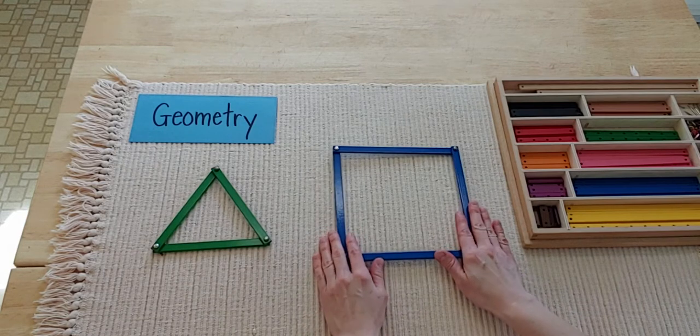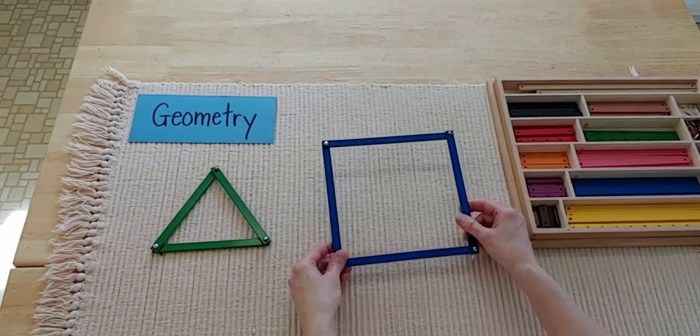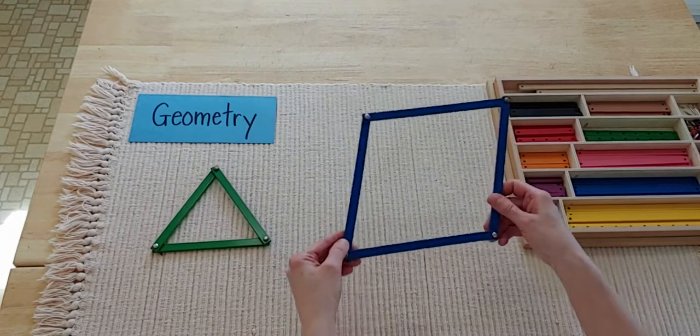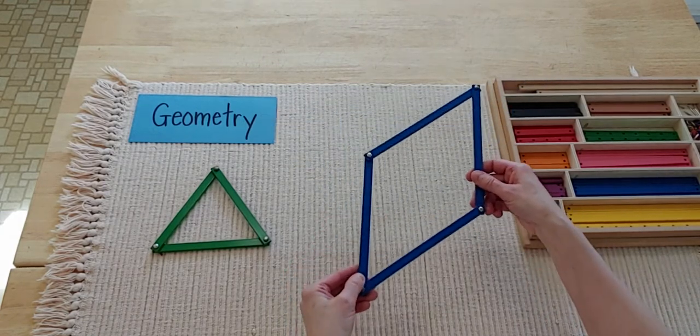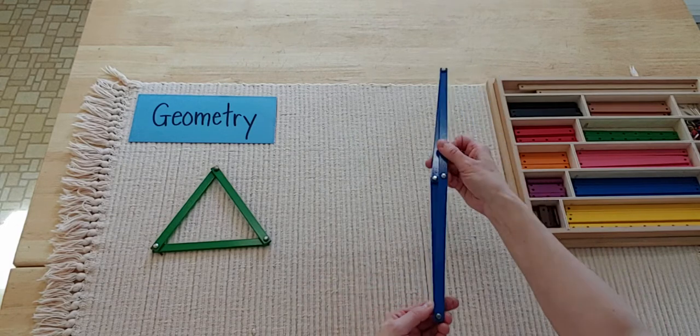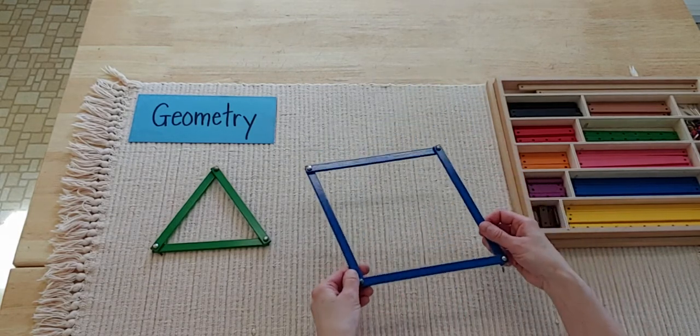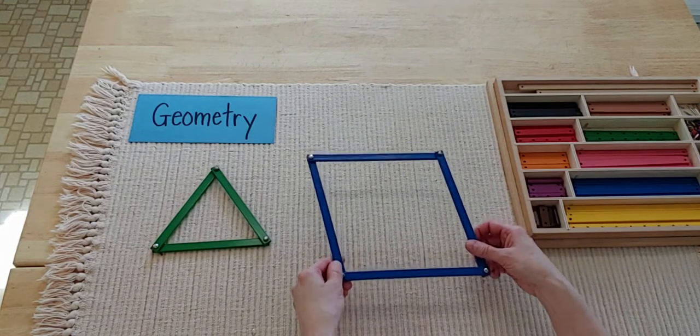Now my square, not doing so good. I can actually bend it quite easily. I can make it into a kite. I can almost make it into another line. It's kind of flimsy. It's not very sturdy like this triangle.